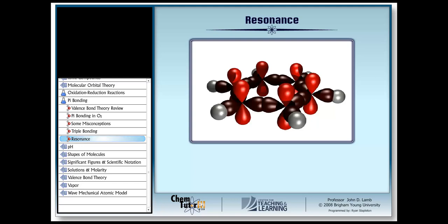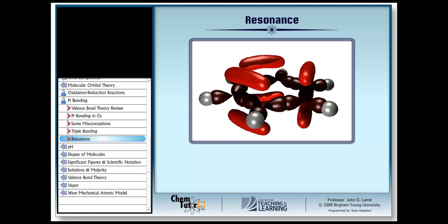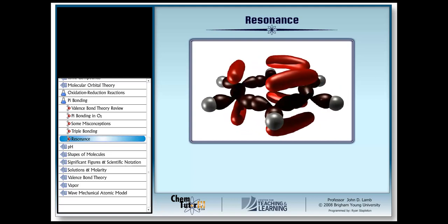These can then overlap side by side to form pi bonds, and they do. So, every other bond in the ring is a double bond, consisting of a sigma and a pi bond.